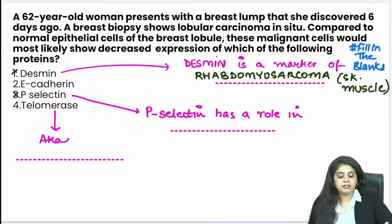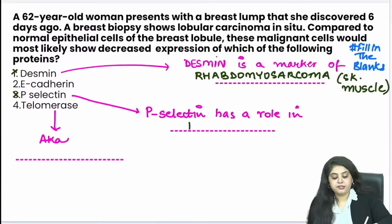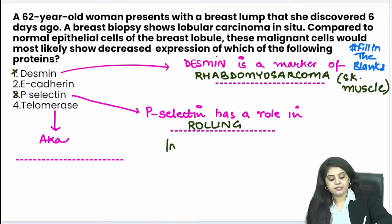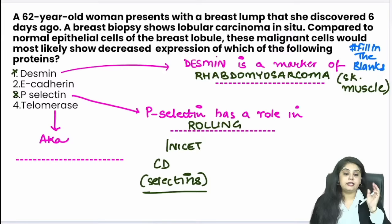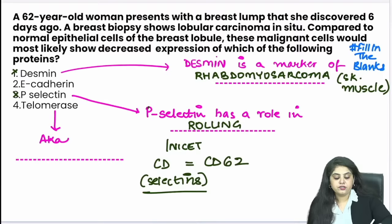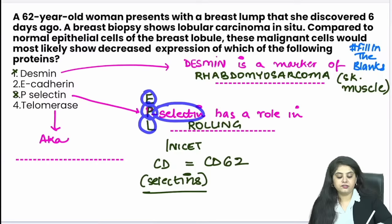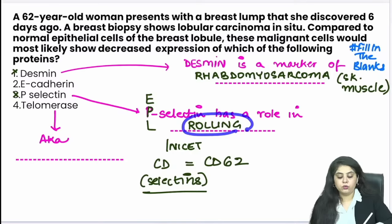P-selectin: forget the P — selectins are studied in the rolling process in the inflammation chapter. For INICET students, the CD marker for selectins is CD62. We have three types of selectins — EPL (English Premier League mnemonic): E-selectin, P-selectin, L-selectin. All selectins are CD62 positive and have a role in rolling during inflammation.